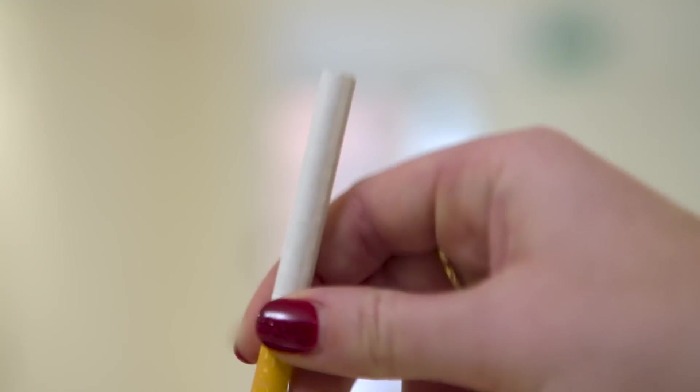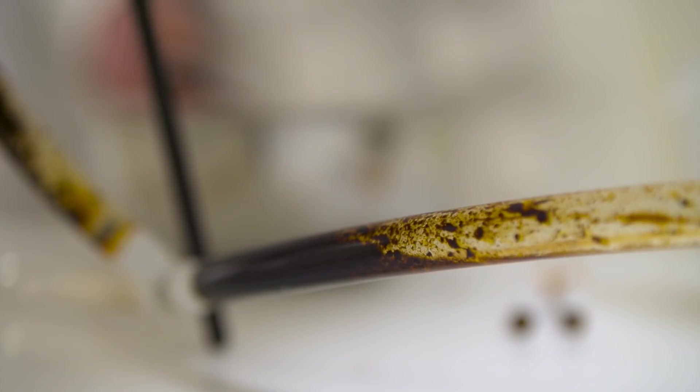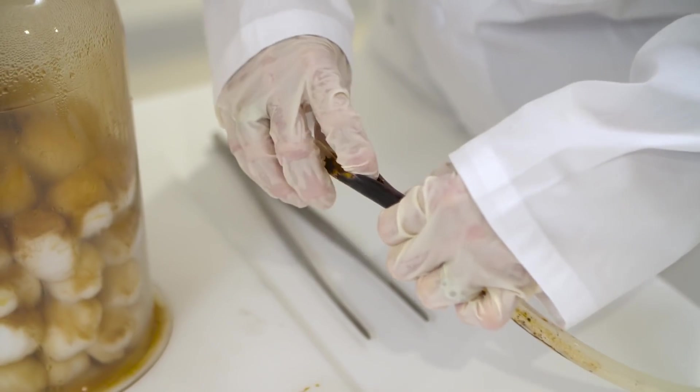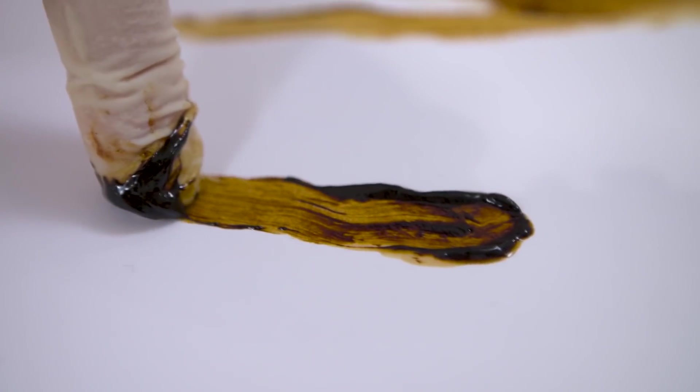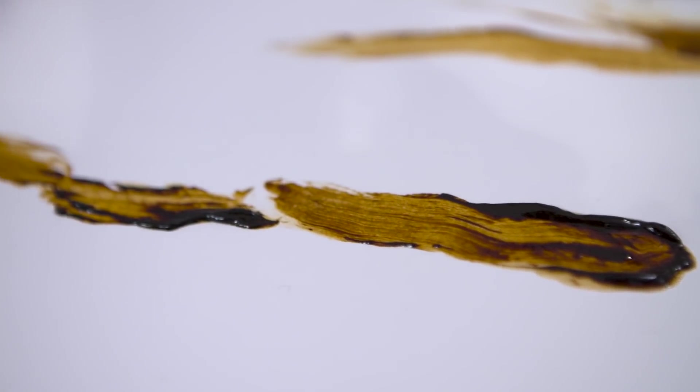So this experiment shows that every cigarette you smoke causes tar to enter your body, and it's the tar that contains the poisonous chemicals that spread through the bloodstream, which are linked to diseases such as heart disease, stroke and cancer.